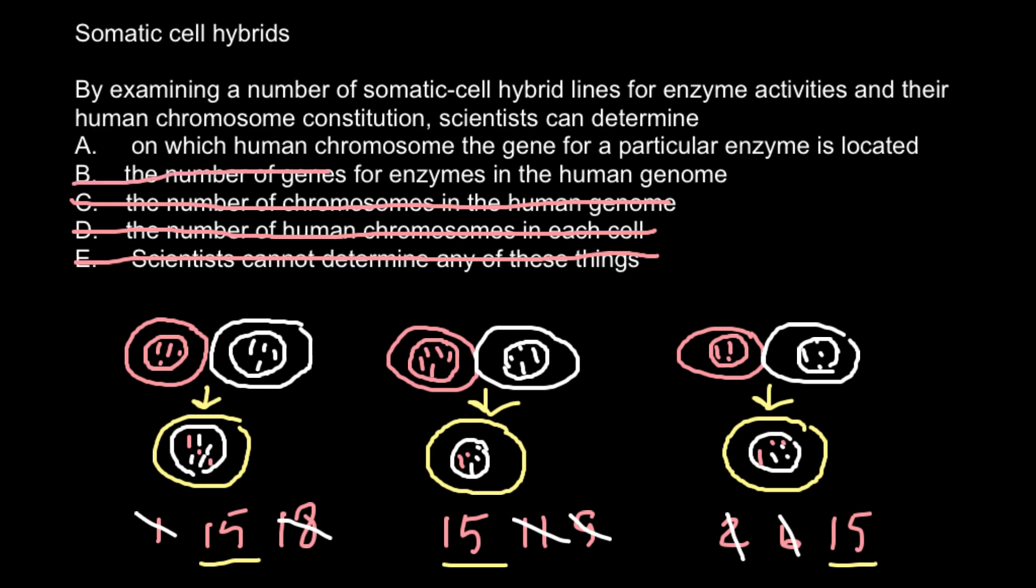So what we can find with somatic cell hybrids is on which human chromosome the gene for a particular enzyme is located. So our answer would be A. And this is all for today. Thank you for your attention. Please subscribe for my new videos that I post almost every day, thumbs up if you like this video, and please write your comments if you have any questions. See you in the next video, goodbye!